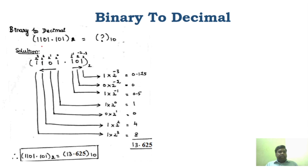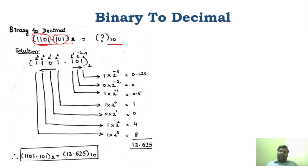You can see this is the binary value which is given and we have to convert it to the decimal. In the binary number, this is the integer part and this is the fractional part. For the integer part, you have to write 2 power 0, 2 power 1, 2 power 2, 2 power 3, and for the fractional part it is 2 power minus 1, minus 2, and minus 3. Now you have to multiply the number with the corresponding powers.